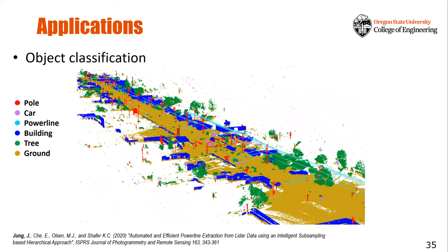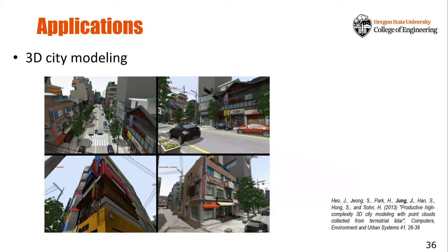We are also focusing on classifying different types of urban objects such as poles, cars, and power lines — using a combination of machine learning and conventional parametric approaches. Once you have segmentation and classification results, you can use this information to create 3D city models. Beyond modeling single buildings, I envision extending our approach to large-scale city modeling, which can be used for management of city-scale infrastructure and to support important decision making in city planning.